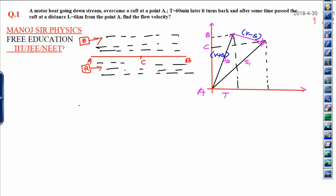I am starting with the first question of EURUDO: a motor boat going downstream overcomes a raft at point A. 60 minutes later, that is 1 hour, it turns back and after some time passes the raft at a distance L equal to 6 kilometers from point A. Let me write here, this is 6 kilometers. This is the motor boat and this is the raft.